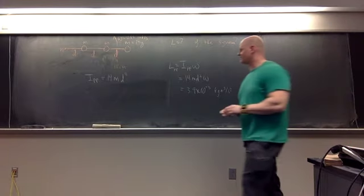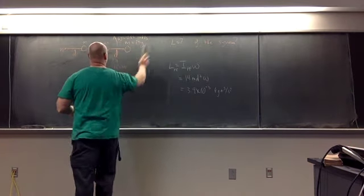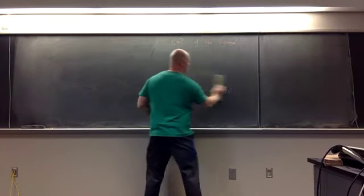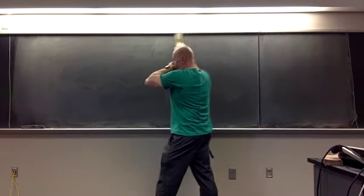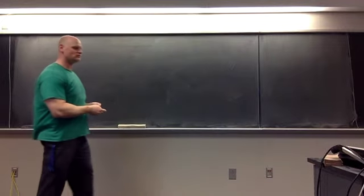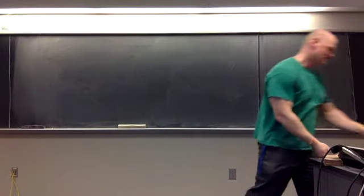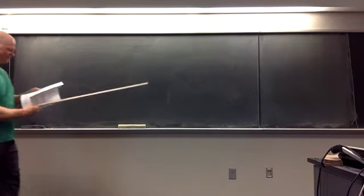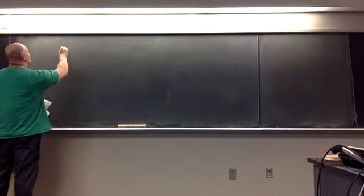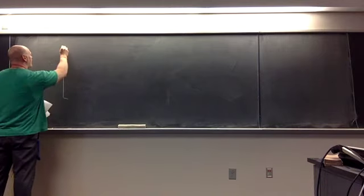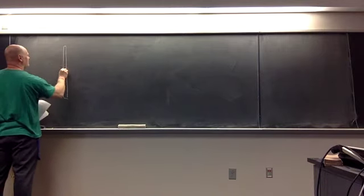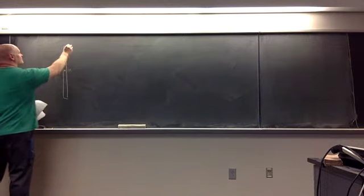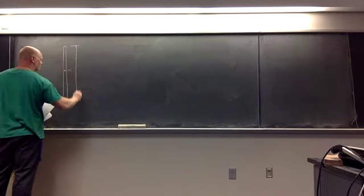Let's look at one more example — this time it's a collision. How do we deal with collisions using conservation of angular momentum? Let's say I have a ruler, which is one meter long, and it's pivoted about the center point. Here is my rod pivoted at the center point — this is my pivot point — and the rod has one meter in length.